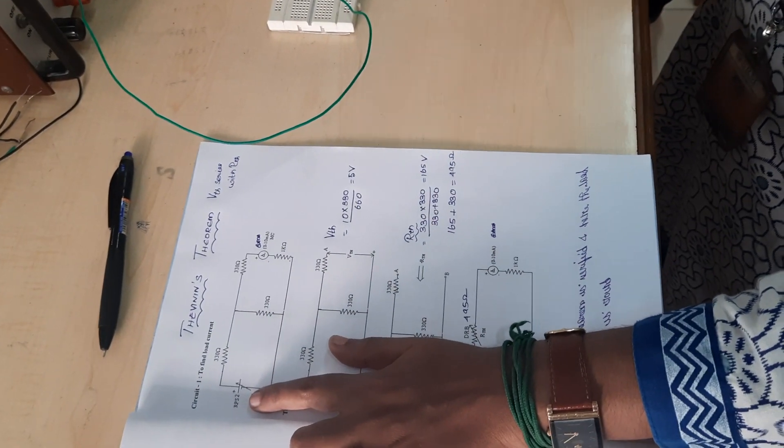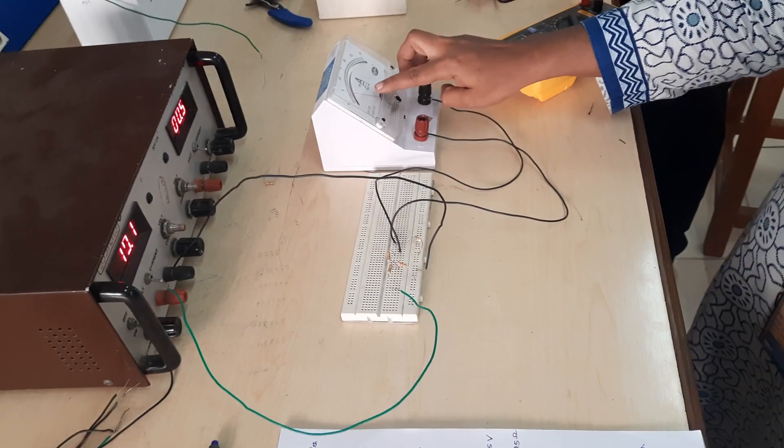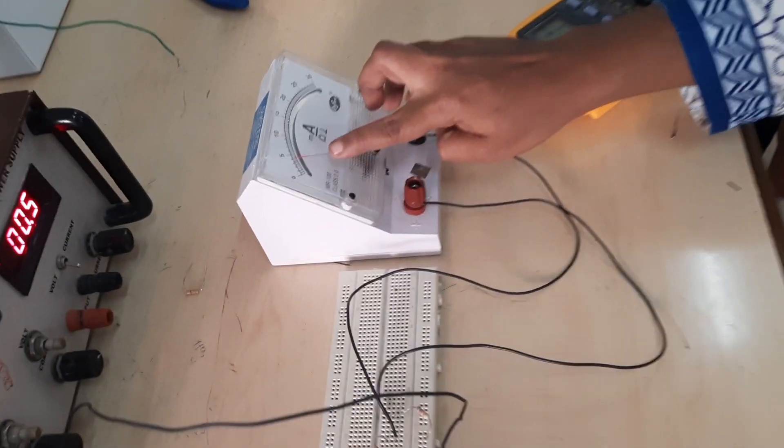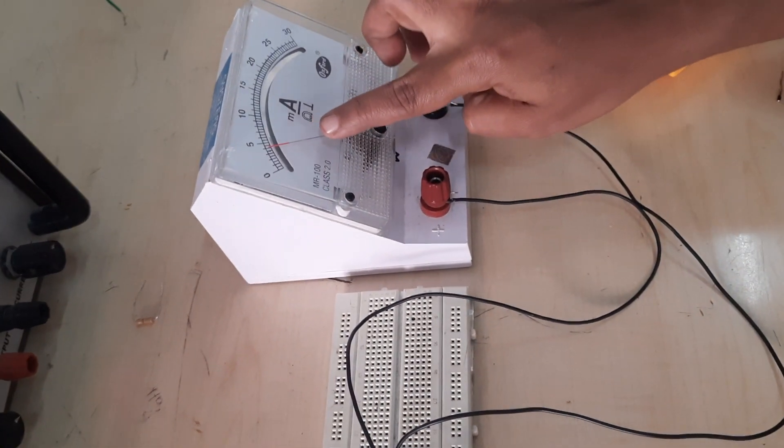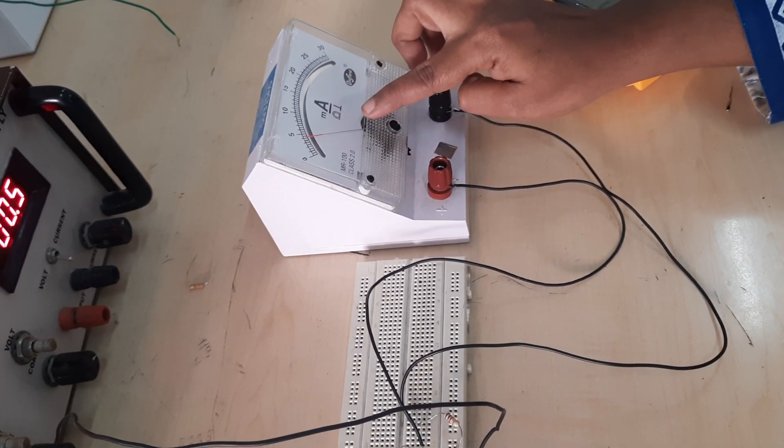When the RPS is set to 10 volts, we observe that the ammeter reads 3.34 milliamps. This value needs to be verified when finding V-Thevenin and R-Thevenin.